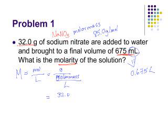We have 32.0 grams, we have a molar mass of 85.0 grams per mole. Notice how the units of grams will cancel out leaving us with moles in our numerator. We need to divide by the volume in liters which is 0.675 liters. So we'll go ahead and just plug all this in.